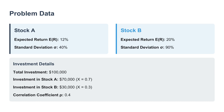Then we have asset B — this is the more aggressive choice, definitely the high-octane option. The expected return E of R-B is way up at 20%, but that comes with a very big catch. That potential reward is paired with a huge amount of risk. Its standard deviation, sigma B, is 90%.